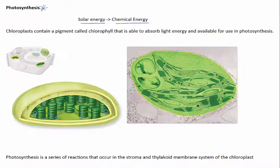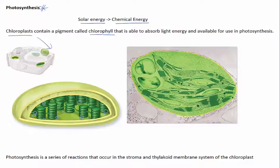These organisms have cells that contain a specialised oval-shaped organelle called chloroplasts. Chloroplasts contain a pigment called chlorophyll that is able to absorb light energy and make it available for use in photosynthesis.